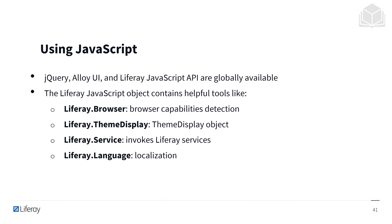When using JavaScript, it's important to know that jQuery, Alloy UI, and the Liferay JavaScript API are globally available. The Liferay JavaScript object contains helpful tools like Liferay.browser, which includes browser capabilities detection.